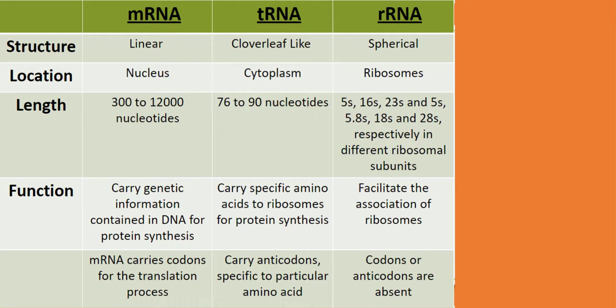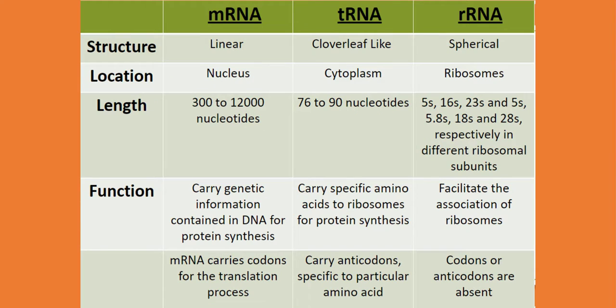Now the next point is the site of their synthesis. mRNA synthesis occurs in the nucleus, tRNA is produced in the cytoplasm, and rRNA is found in ribosomes.